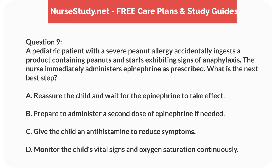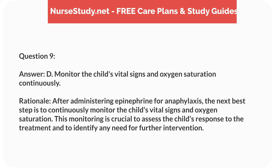Question 9. A pediatric patient with a severe peanut allergy accidentally ingests a product containing peanuts and starts exhibiting signs of anaphylaxis. The nurse immediately administers epinephrine as prescribed. What is the next best step? A. Reassure the child and wait for the epinephrine to take care of the patient. B. Prepare to administer a second dose of epinephrine if needed. C. Give the child an antihistamine to reduce symptoms. D. Monitor the child's vital signs and oxygen saturation continuously. Answer: D. Monitor the child's vital signs and oxygen saturation continuously. Rationale: After administering epinephrine for anaphylaxis, the next best step is to continuously monitor the child's vital signs and oxygen saturation. This monitoring is crucial to assess the child's response to the treatment and to identify any need for further intervention.